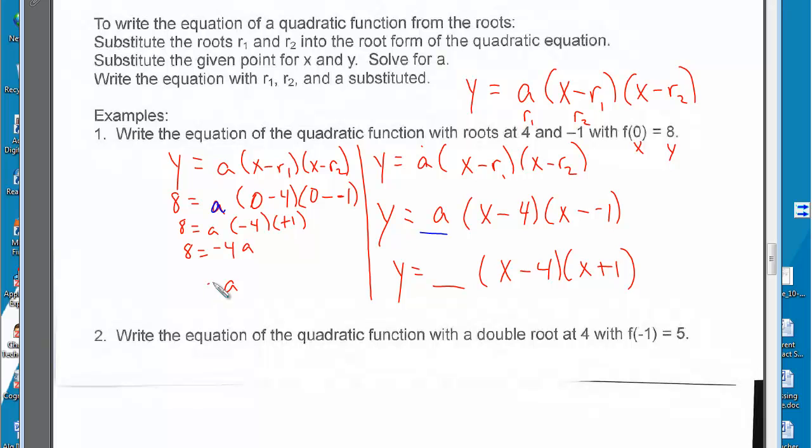a is equal to 8 over negative 4, which is equal to negative 2. So this is what I put into the blank. This is the equation of the quadratic in root form, given the roots and a point.